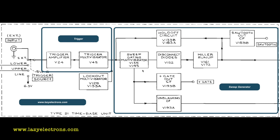Let's look inside the time-based plugin unit and see the major functions. For simplicity, I've broken it into two pieces: the trigger section and the sweep generator section. The trigger section generates the trigger based on either the vertical input signal, the line, or an external trigger, and passes it to the sweep generator, which generates the sweep voltage to drive the deflection plates. There is also a lockout multivibrator used for delayed sweep or single sweep operations.